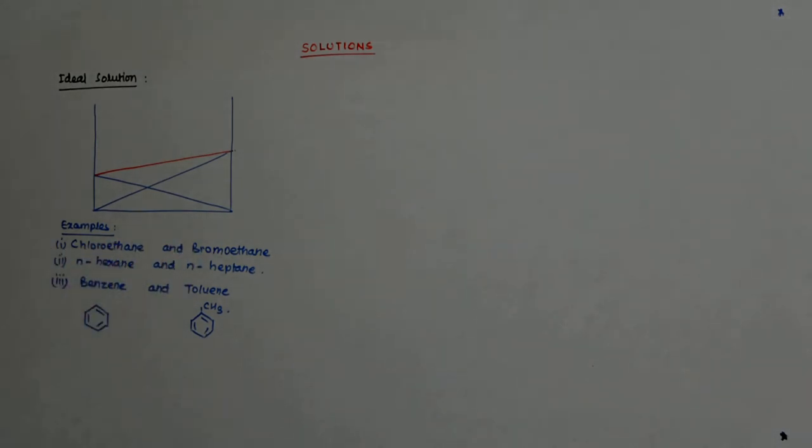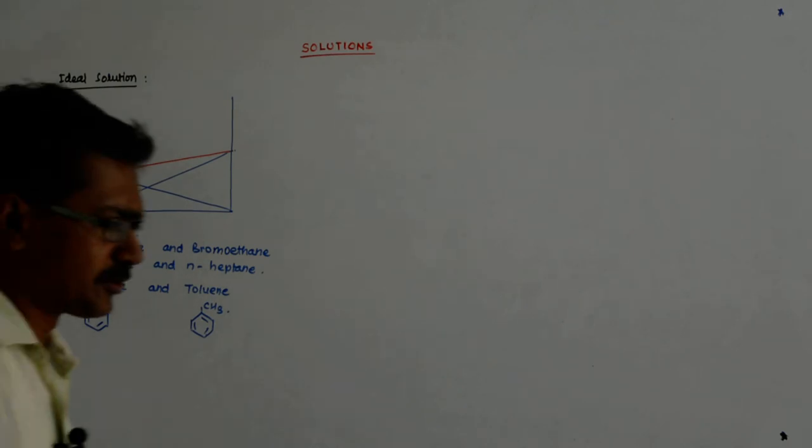So chloroethane and bromoethane, and n-hexane and n-heptane, and benzene and toluene—these are the three which come the closest to the ideal solution.